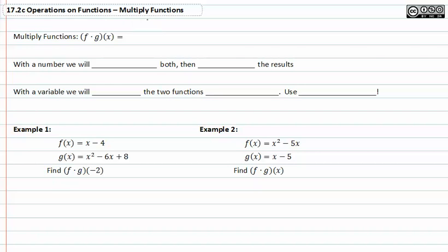When multiplying functions, we should recognize that f times g is the same as f times g. Not confusing f to be multiplication or g to be multiplication, but that the functions themselves are being multiplied together. With a number, we will evaluate both, then multiply the result. With a variable, we will multiply the two functions together. Don't forget to use parentheses.